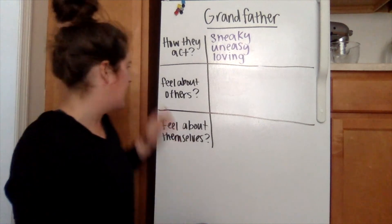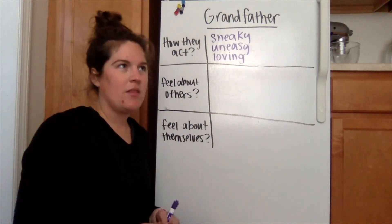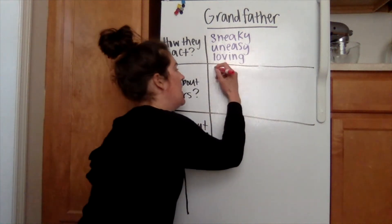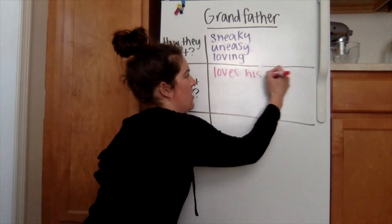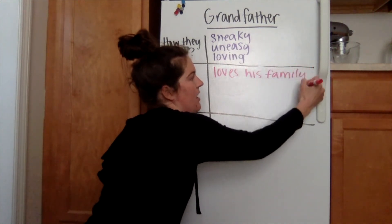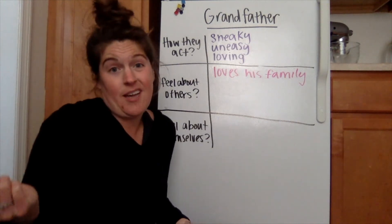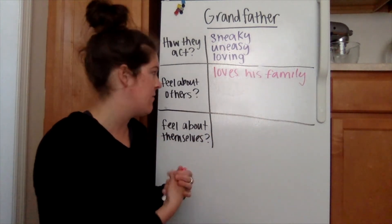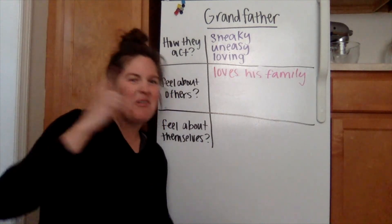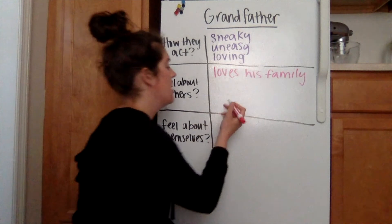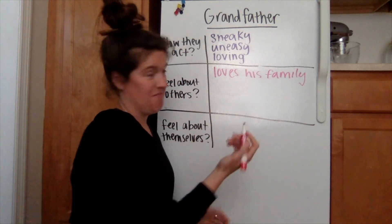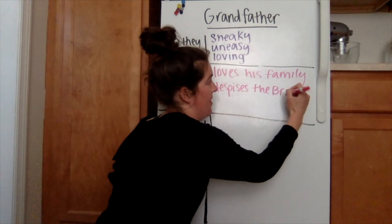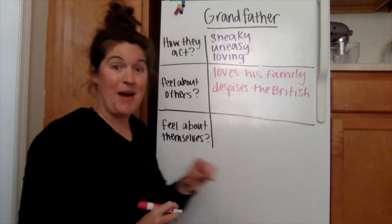The next question: how do they feel about others? There are two groups of people I saw Grandfather come in contact with. One was his family, and I think he loves his family — you can tell he would do anything in his power to help and support them. When his family moved to New York, he welcomed them in and allowed them to live with him. But on the flip side, those people living upstairs — he absolutely hates them. He despises the British. If you don't know that word, despise means hate. And you can tell that by the things he says and how he speaks about the British in chapter one.